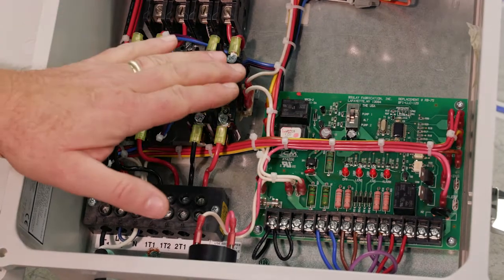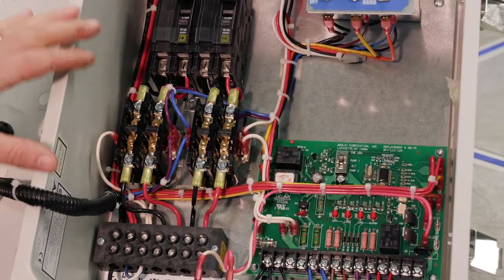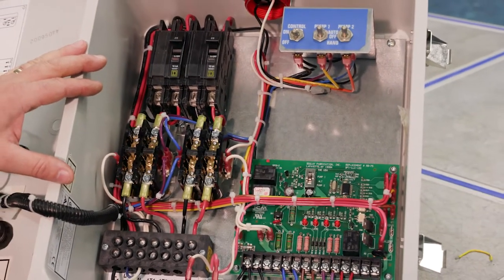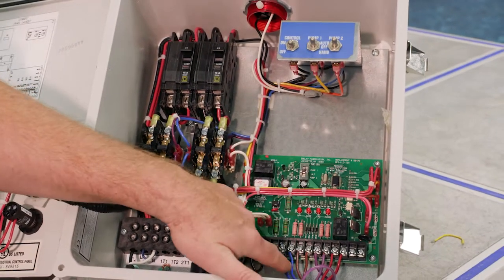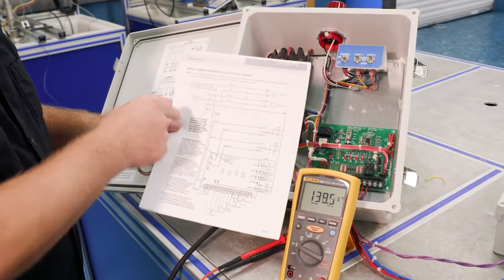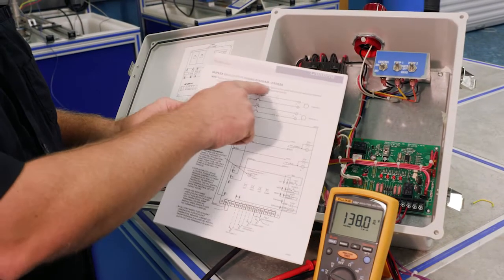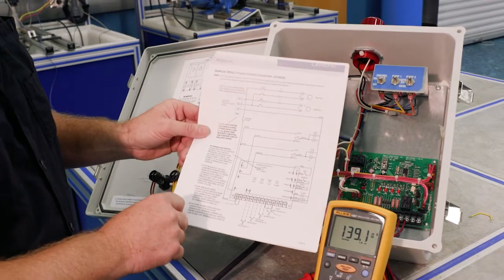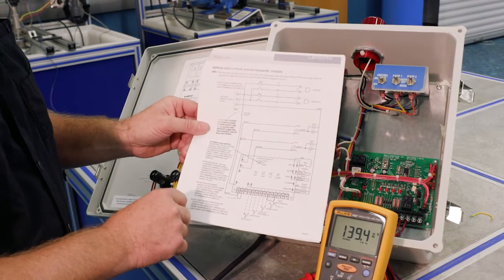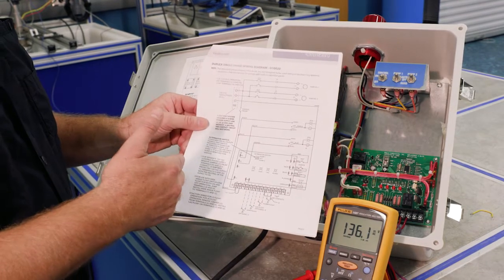Footnote number two has to do with a wide angle float switch. Footnote number three has to do with the switches down here, and we'll cover that when we get to the switches. Step one, we talked about really wiring issues. So we're going to pull out this wiring diagram and make sure that we have our jumpers in place and certainly a neutral.